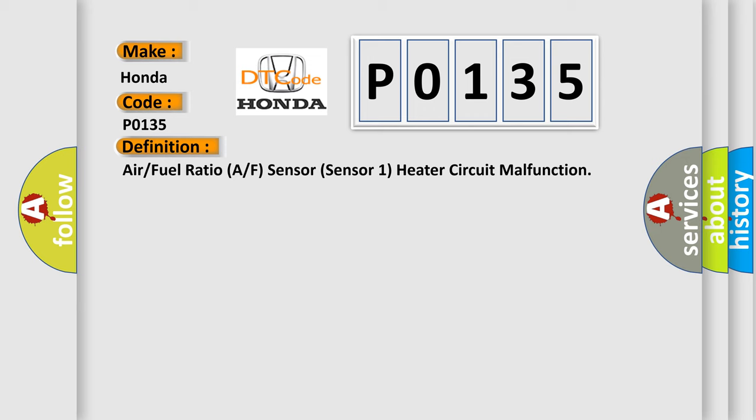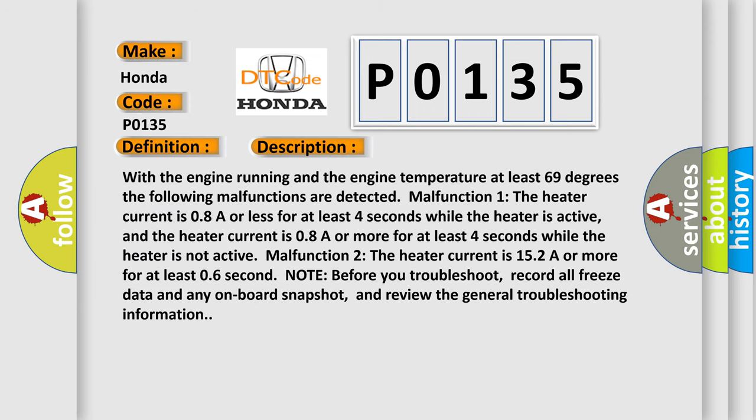Here is a short description of this DTC code. With the engine running and the engine temperature at least 69 degrees, the following malfunctions are detected. Malfunction 1: The heater current is 0.8 A or less for at least 4 seconds while the heater is active, and the heater current is 0.8 A or more for at least 4 seconds while the heater is not active. Malfunction 2: The heater current is 15.2 A or more for at least 0.6 seconds.